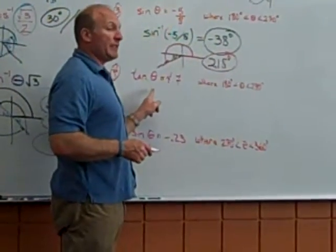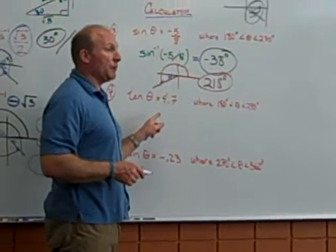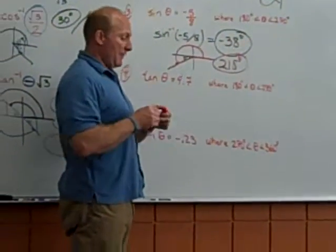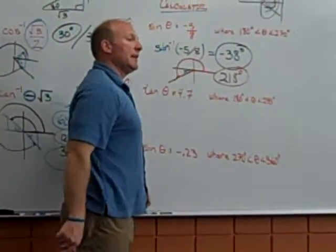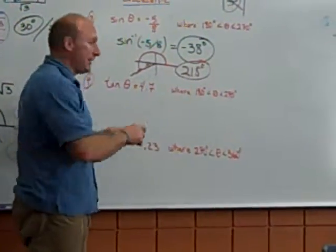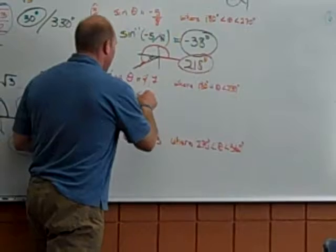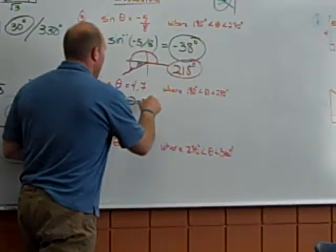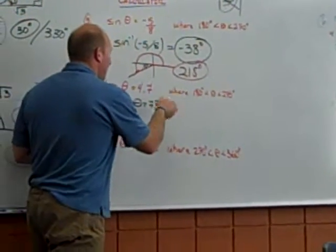Inverse tangent 4.7. Type it in again. Five seconds. One, two, three, four, five, six, seven, eight, nine, ten, eleven. What is it? Seventy-eight. Approximately.